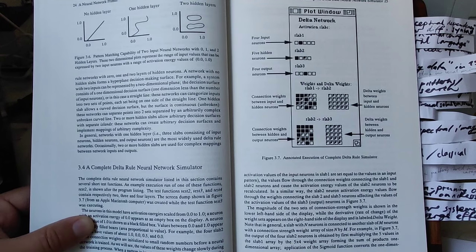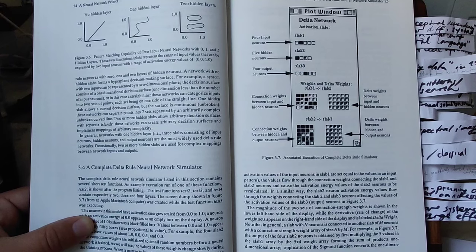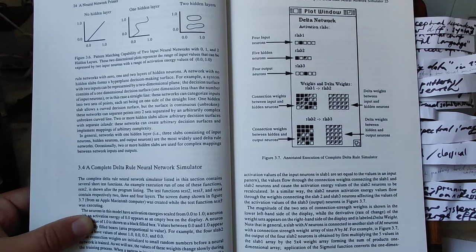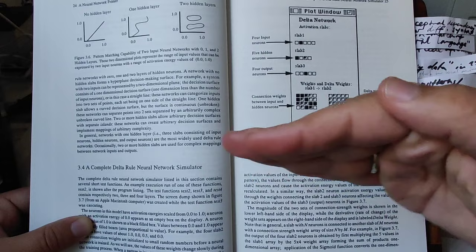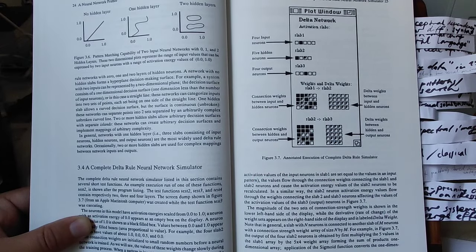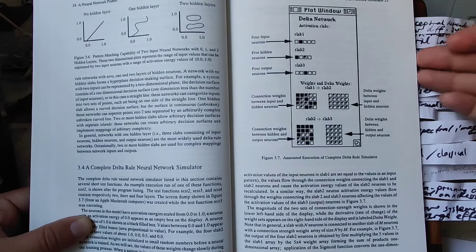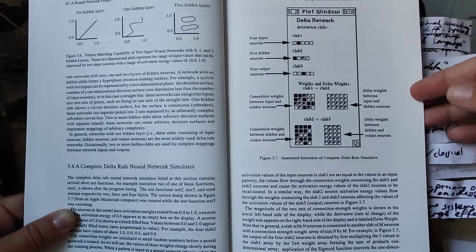In modern times there had been a dispute as to the relation between a very broad network with a lot of neurons per layer though not very many layers versus a very deep network. It turns out that a deeper network may be a better choice for more complex problems rather than a shallow network with more neurons per layer.